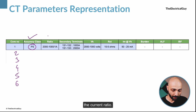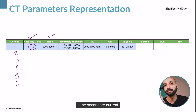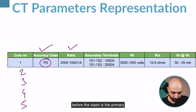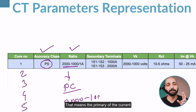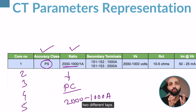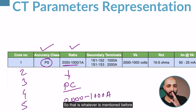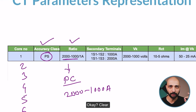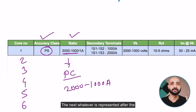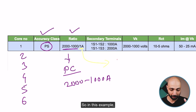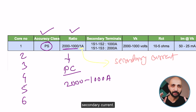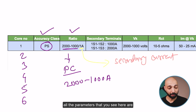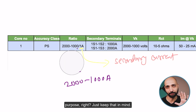The next column indicates the current ratio. This column indicates two types of current: the primary current and the secondary current. Whatever is mentioned before the slash is the primary current. Here it is mentioned as 2000-1000, meaning the primary of the current transformer can have two different ratios — one for 2000 ampere and another for 1000 ampere. Whatever is represented after the slash represents the secondary current. In this example, it is mentioned as 1 ampere. Please note all parameters shown here are for example and study purposes only.